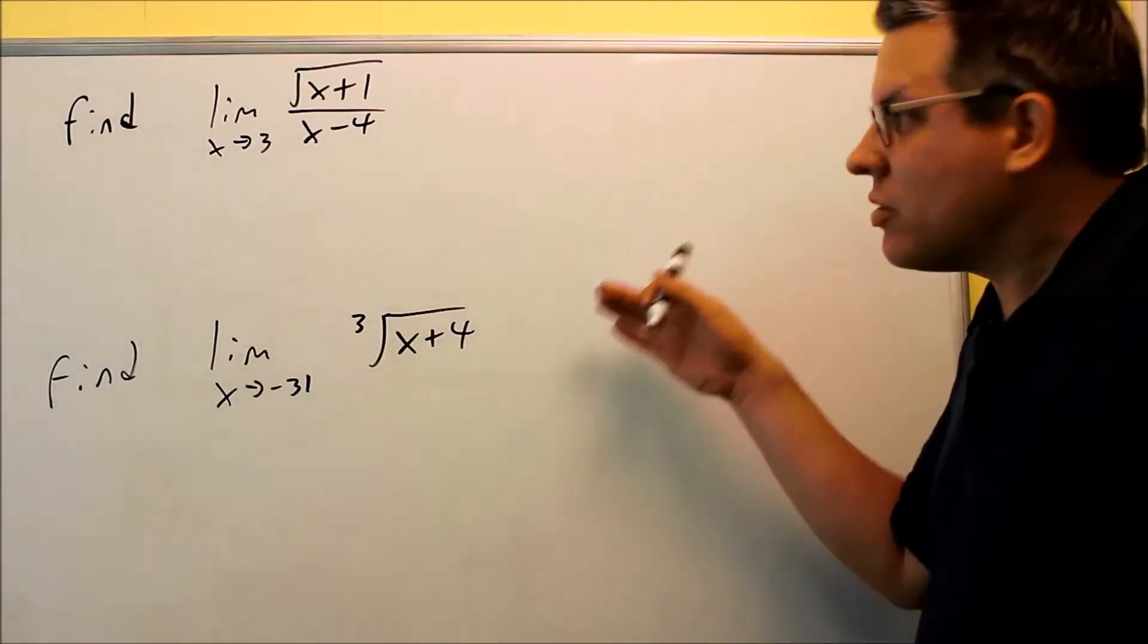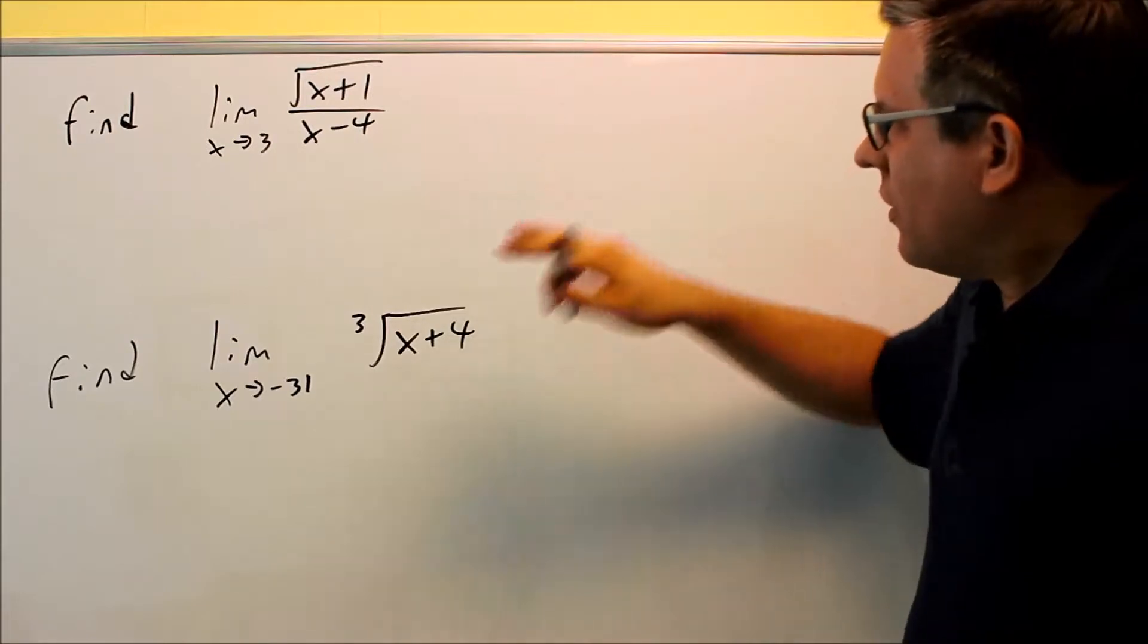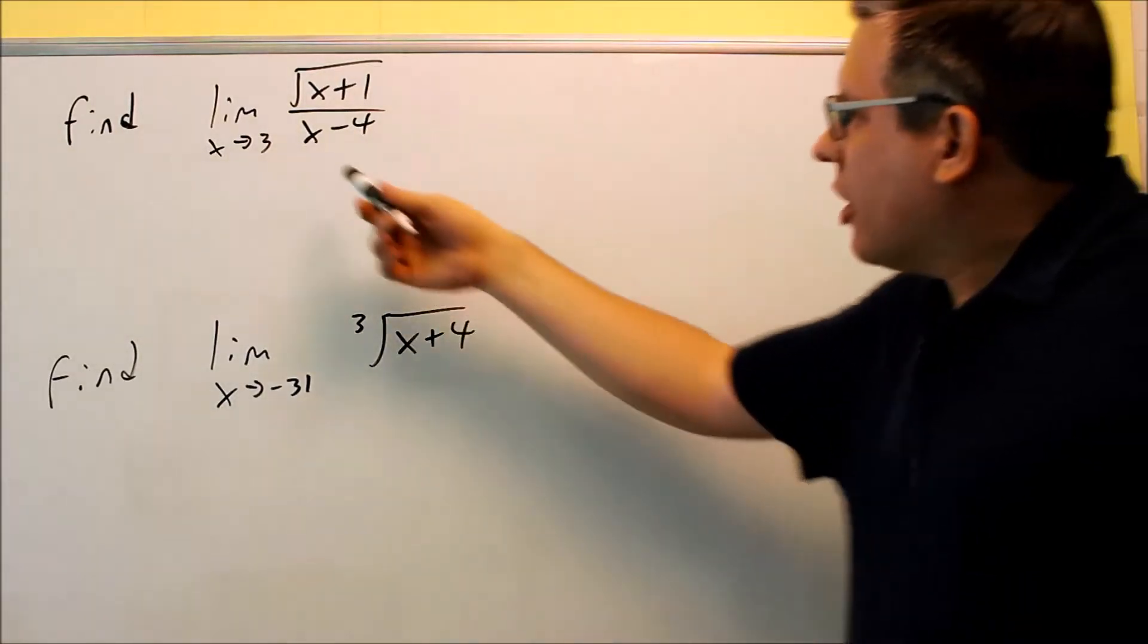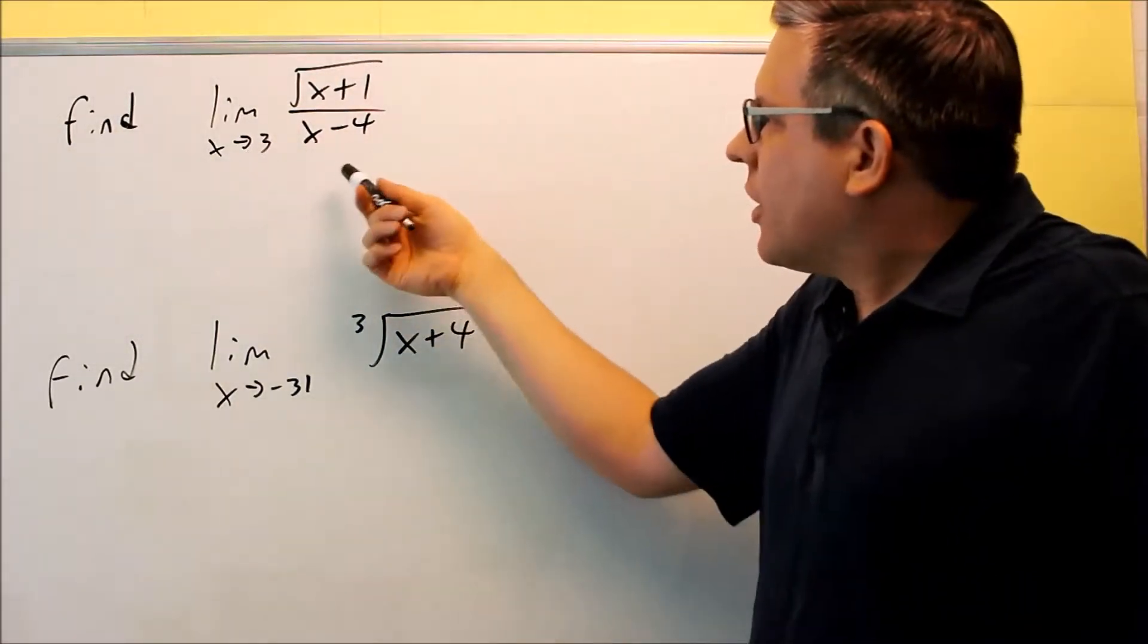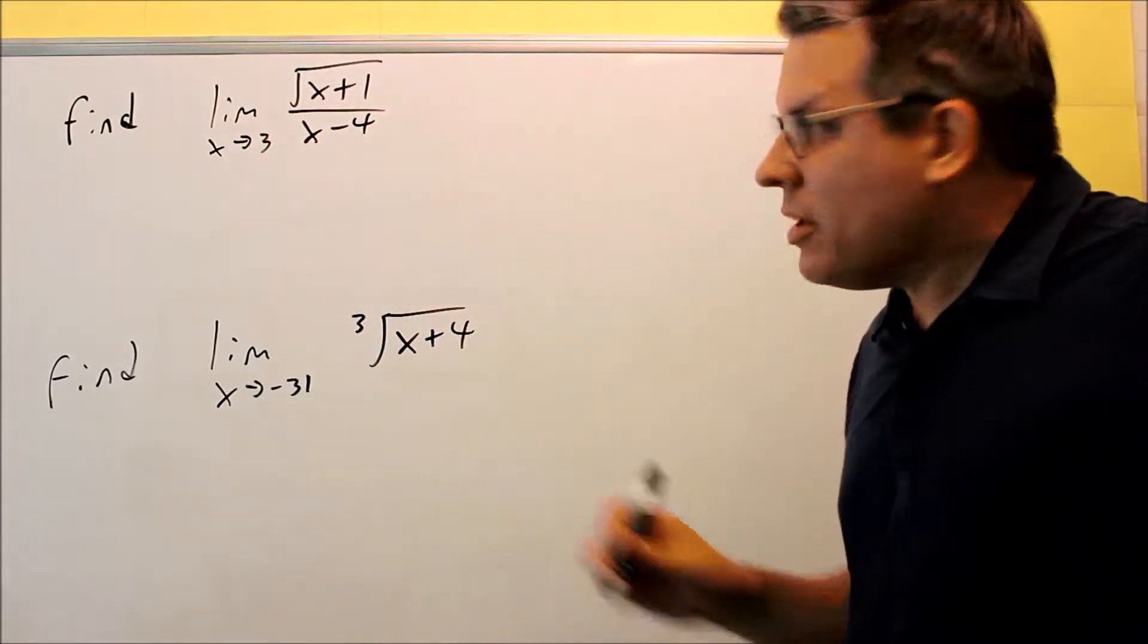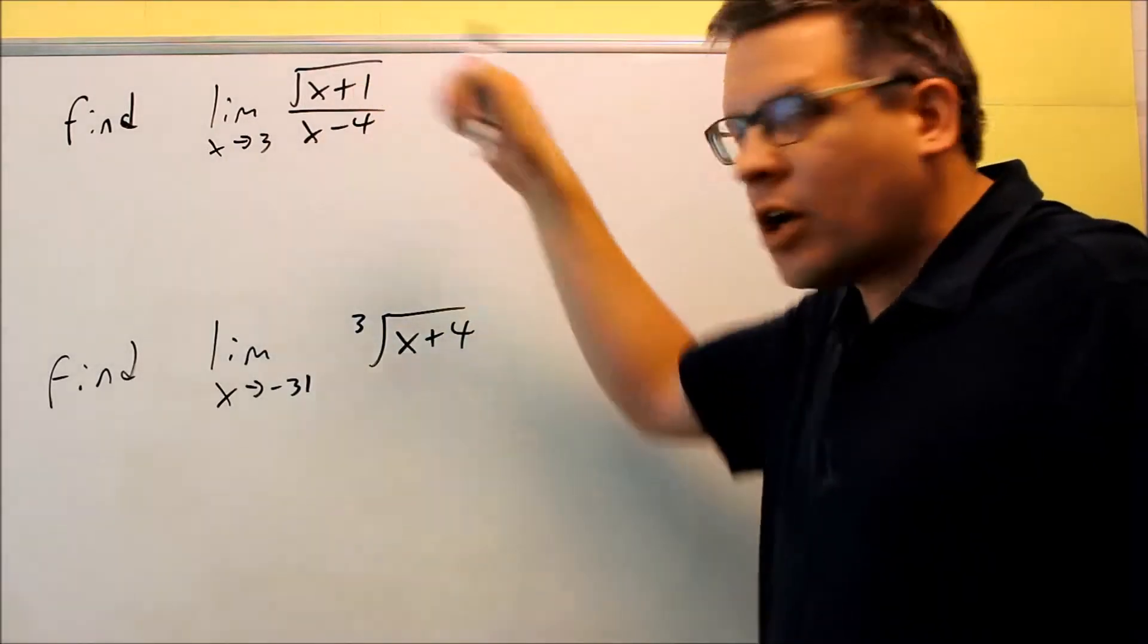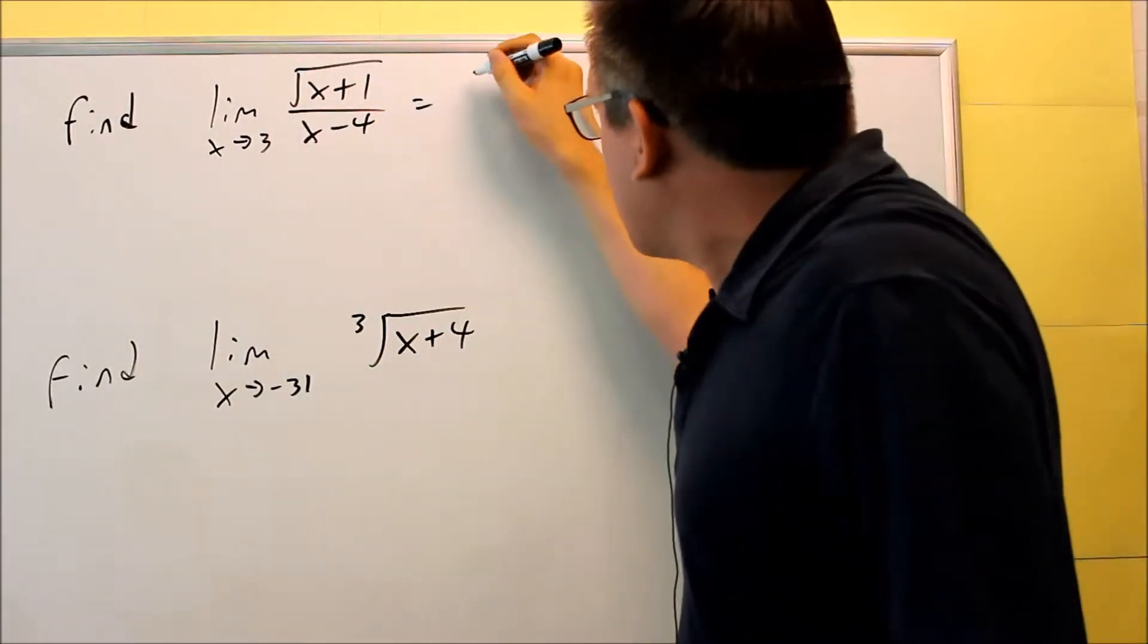Okay, now let's take a look at some limits that deal with roots and radicals. So for this first one, limit as x approaches 3. If I put 3 into the bottom, it does not give me a 0. That means I don't need to worry about dividing by 0. So this is one where I can just plug the number in directly and get the answer.